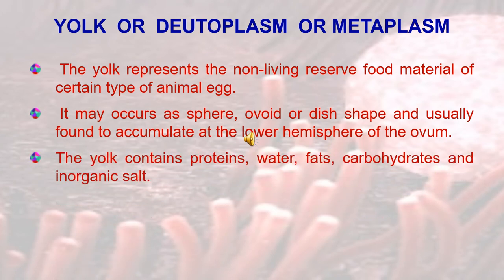Yolk, also known as deutoplasm or metaplasm, represents the non-living reserved food material of certain types of animal eggs. It may occur as rod-shaped, ovoid or disc-shaped and is usually found to accumulate at the lower hemisphere of the ovum. The yolk contains proteins, water, fats, carbohydrates and inorganic salts.